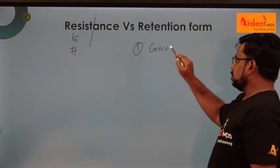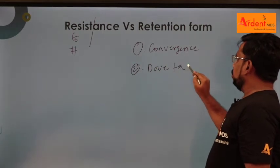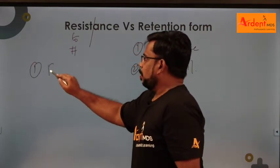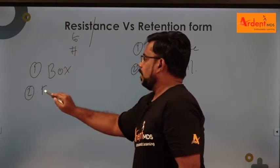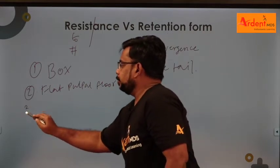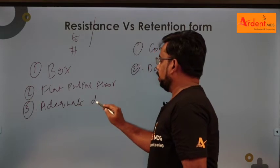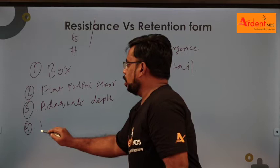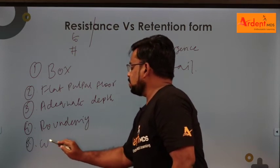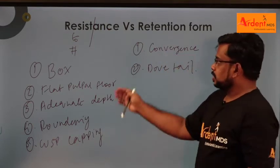Features of retention form: number one, convergence; number two, dovetail. Features of resistance form: number one, box-shaped cavity; number two, flat pulpal floor; number three, adequate depth of the cavity; number four, rounding of the line angle; and cusp capping. All of these come under resistance form.